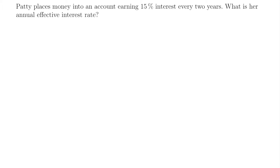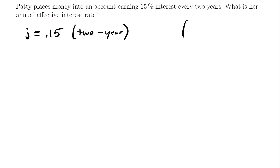I'll write her interest rate as J, because it's not a yearly rate. So J is going to be equal to 0.15, which is the same as 15% in decimal format. This rate is a two-year rate — it takes place every two years. We want to know her annual effective interest rate, and we'll use the formula: (1 + J)^M − 1 equals the annual effective interest rate. We need to know our M value.